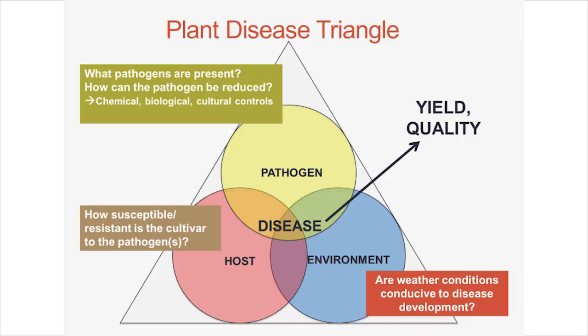We're entering the part of the growing season where fungicide applications have traditionally been applied to our growing corn and soybeans. As we continue to monitor the progress of our crop, there are a lot of things to keep in mind. The disease triangle is the ultimate predictor of fungal infection in our crops — we need to constantly evaluate the potential pathogens, the environment, and the host crop. Let's examine each side of the triangle a little closer.